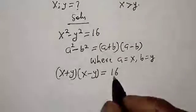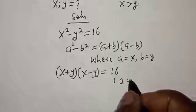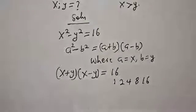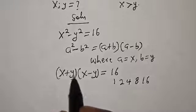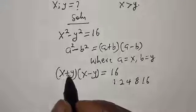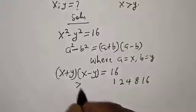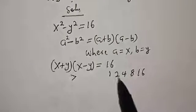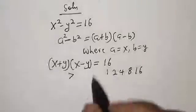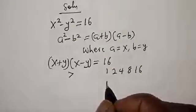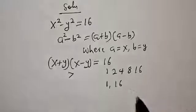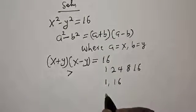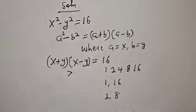Let's look for the factors of 16. We have 1, 2, 4, 8, and 16. Now, take note: (x + y) is greater than (x − y). We look for two factor pairs whose product gives 16. We have 1 and 16, and also 2 and 8.